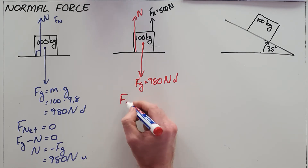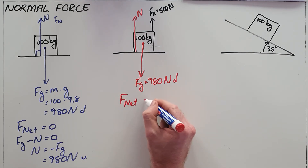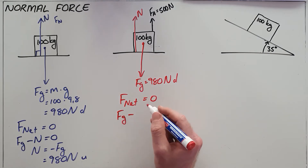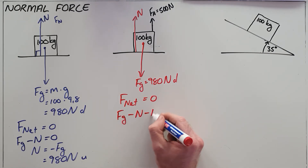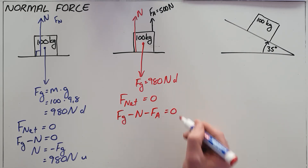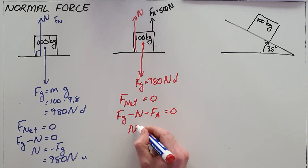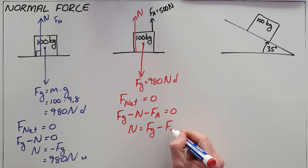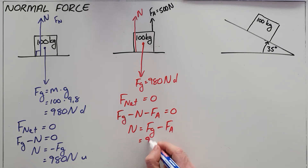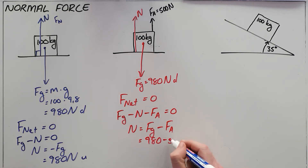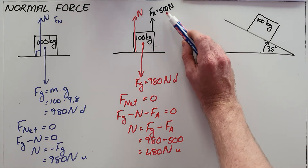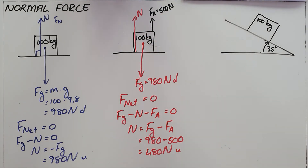By Newton's first law, since this object is not moving, the net force acting on it is zero. The net force is made up of all forces acting downward minus the forces acting upward — the normal force and the applied force — which equals zero. This gives us the normal force as the force of gravity minus the applied force: 980 minus 500, which tells us the ground is exerting a force of 480 Newtons upwards, which together with the applied force is equal but opposite to the gravitational force.